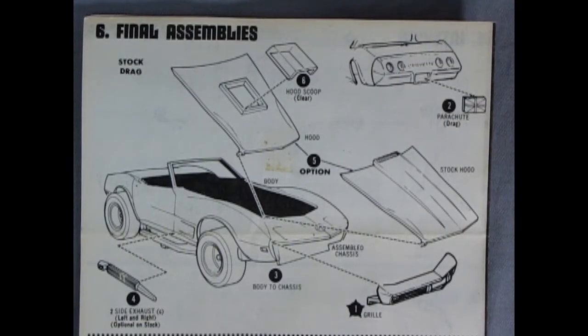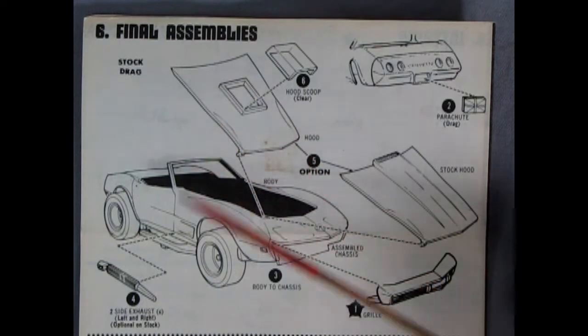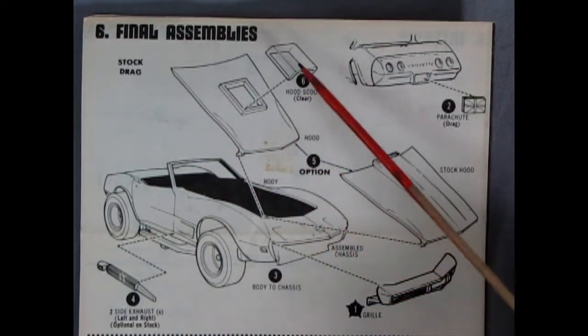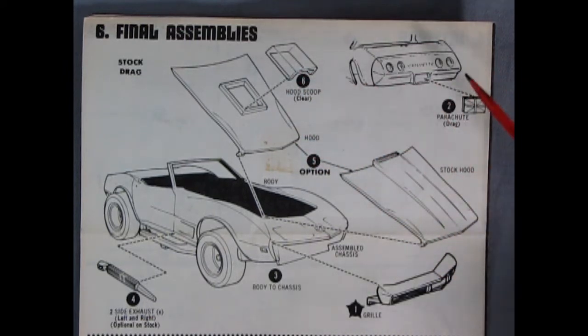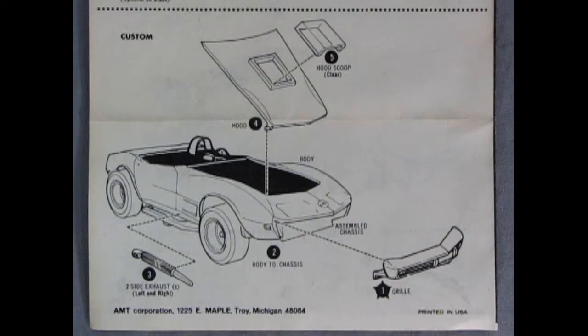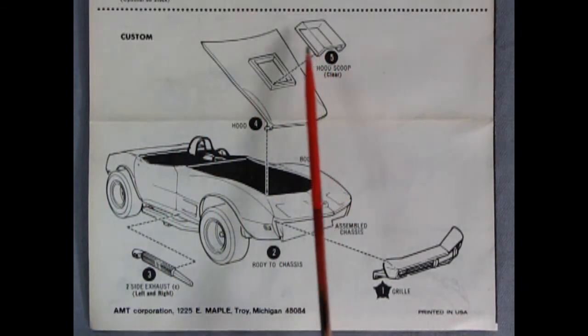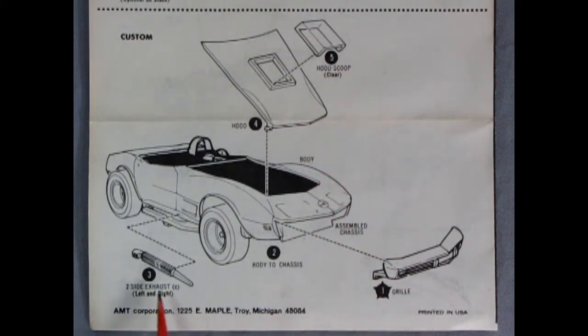Panel six continues with our final assemblies. And this is for the stock and drag race version. Here we have a clear hood scoop going onto this custom hood for clearance for the blower. Then we have a parachute gluing onto the back for the drag racer, as well as side exhausts. And then here we have our grille going on place. And if you want the stock hood there's the option for it. And the final piece of these instructions is of course our custom assembly. Again using the drag hood scoop and hood, the side lake pipes, and our front end.